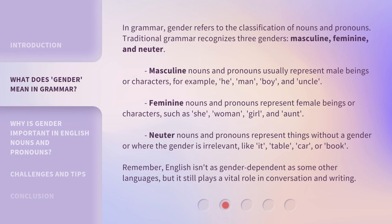In grammar, gender refers to the classification of nouns and pronouns. Traditional grammar recognizes three genders: masculine, feminine, and neuter. Masculine nouns and pronouns usually represent male beings or characters. For example: he, man, boy, and uncle.